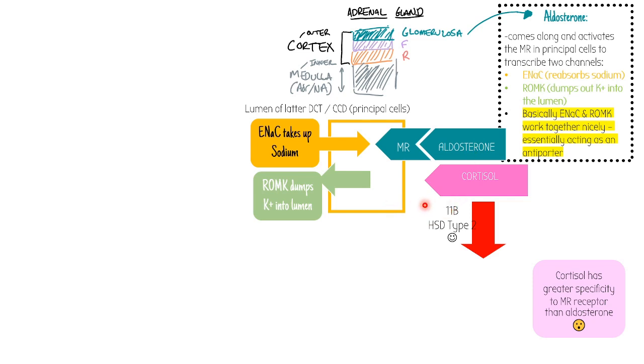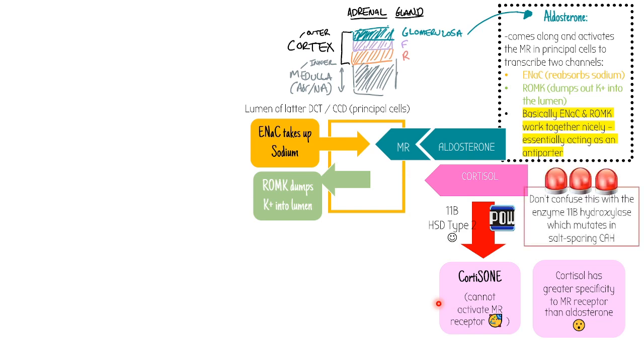However, this usually isn't a problem because we have an enzyme called 11β-HSD type 2, and this comes along to cortisol and converts it to cortisone. As you can see, cortisone doesn't fit into the mineralocorticoid receptor. So in normal circumstances, this enzyme is expressed locally, therefore stopping the MR from being activated by cortisol involuntarily.